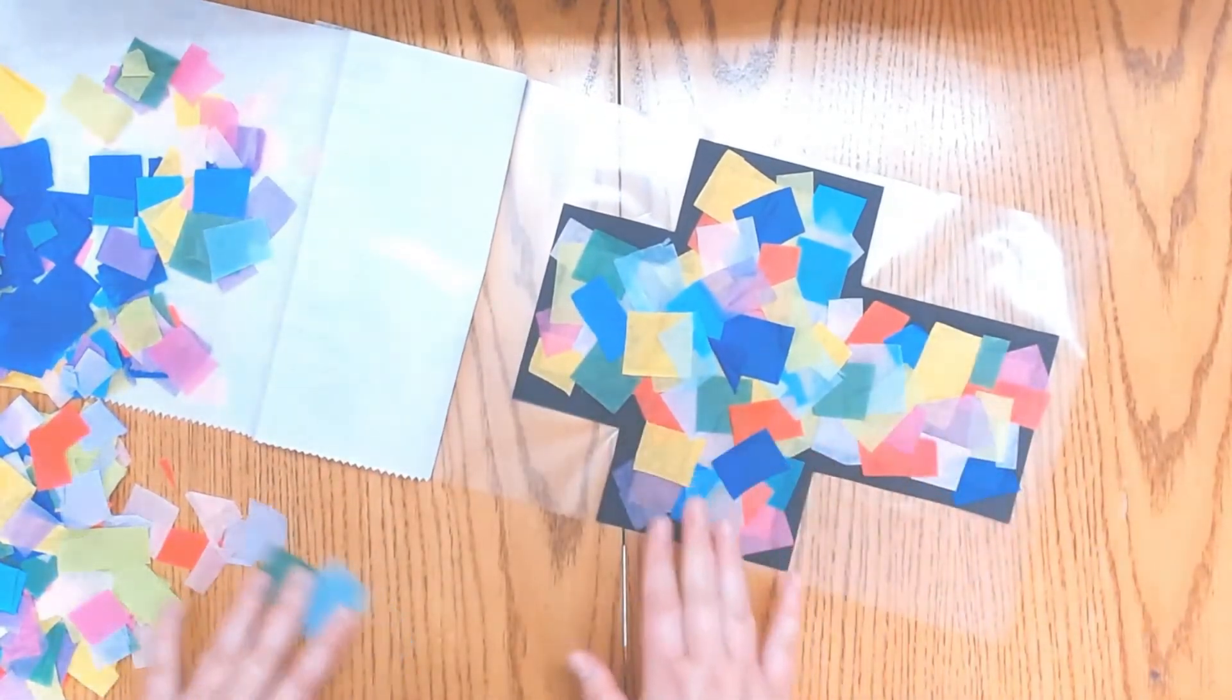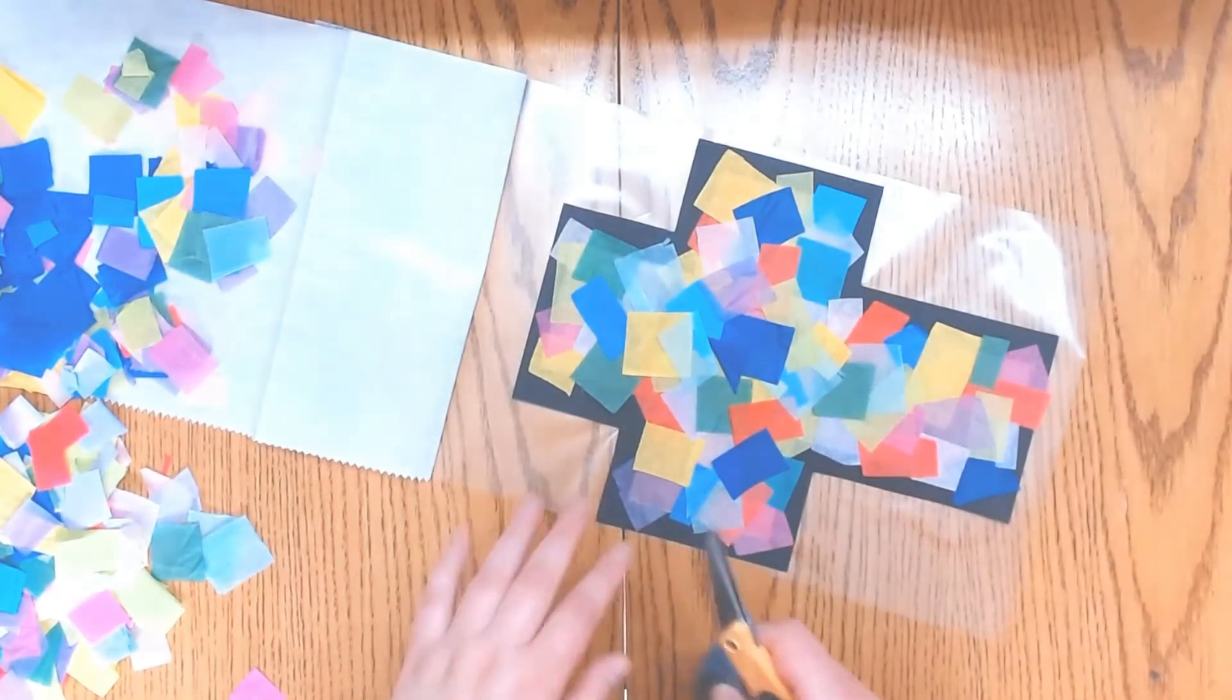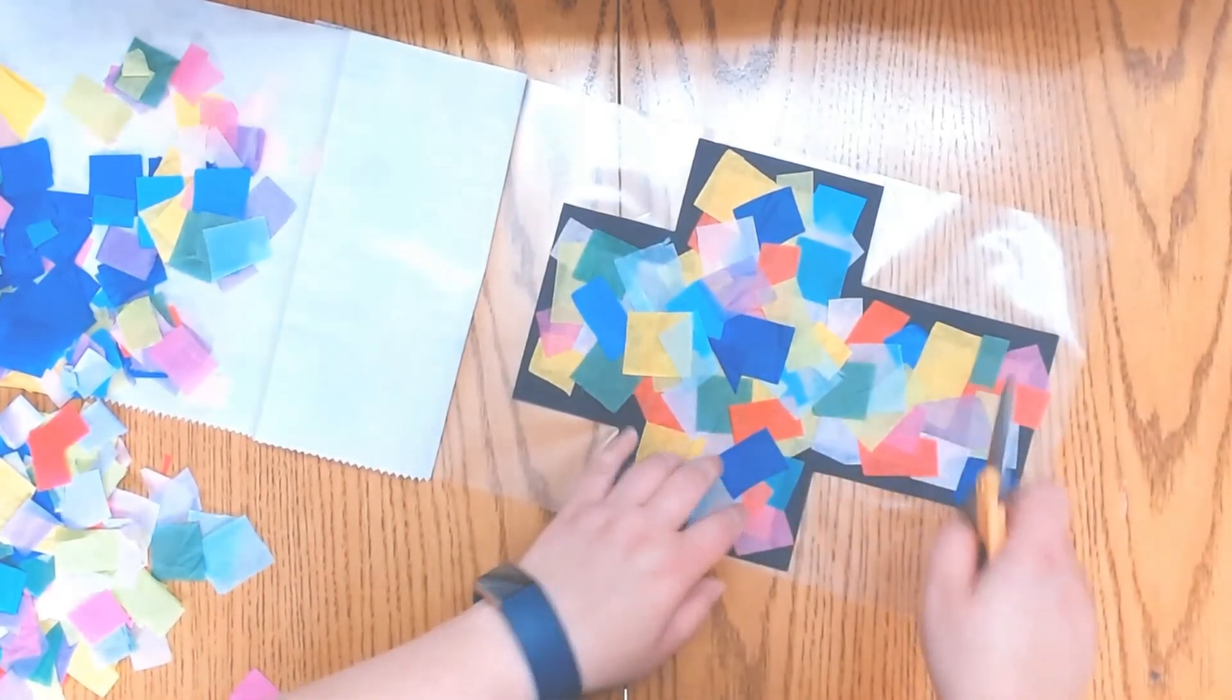Okay. Now that we're done, we're going to take a pair of scissors and we're going to cut out our stained glass cross.